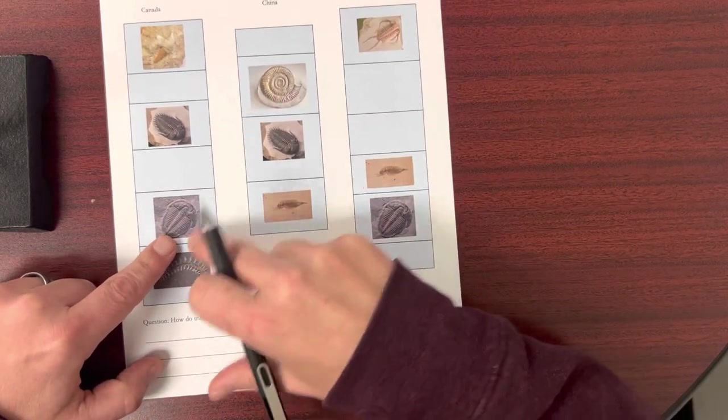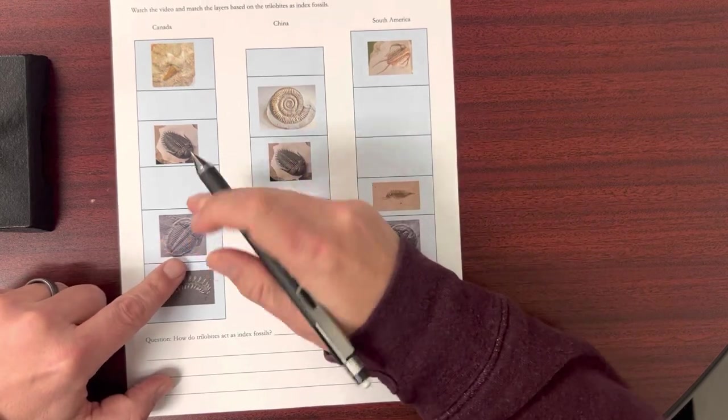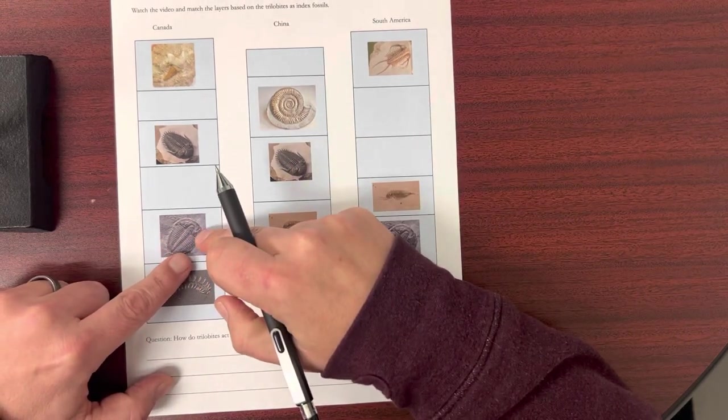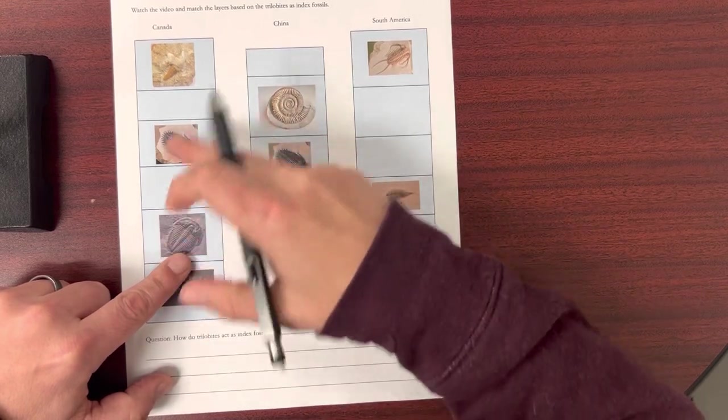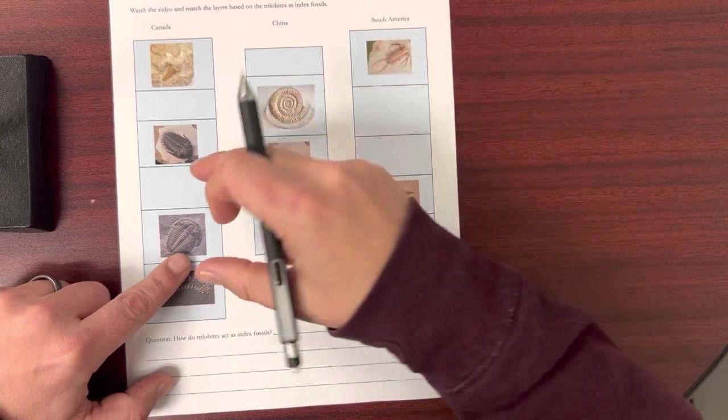And they have to evolve very rapidly, so this is a good example. This trilobite has eventually evolved into this other trilobite, so there's differences in their appearance. That's the evolutionary change.